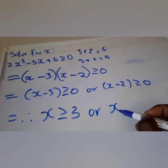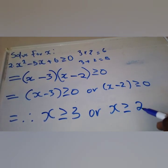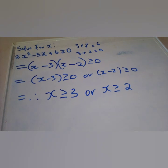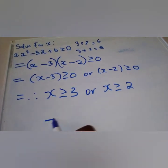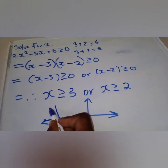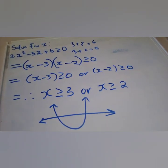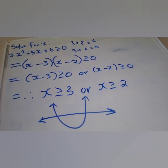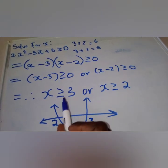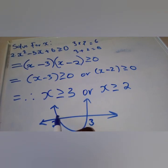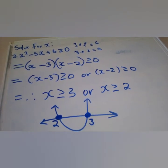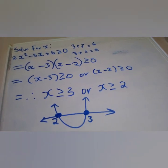Transposing gives x ≥ positive three, or x ≥ positive two. Now we represent our answers graphically using the parabola. Since both answers are positive, the larger one — three — goes to the right-hand side and the smaller one — two — goes to the left-hand side. Because we have greater than or equal to, we use the closed dot.